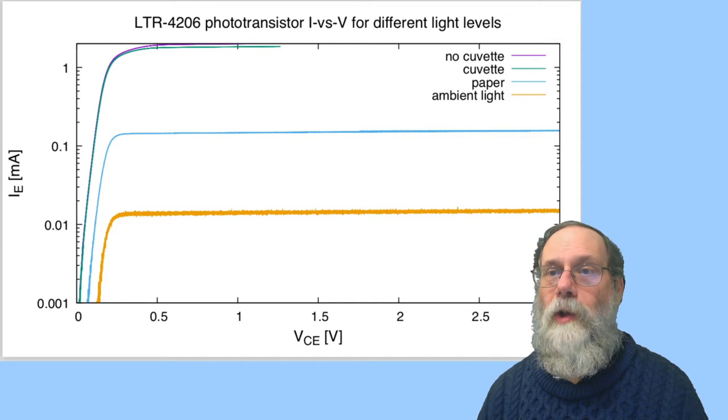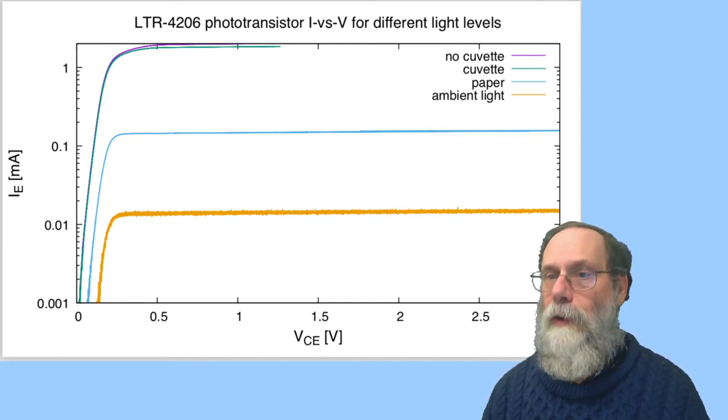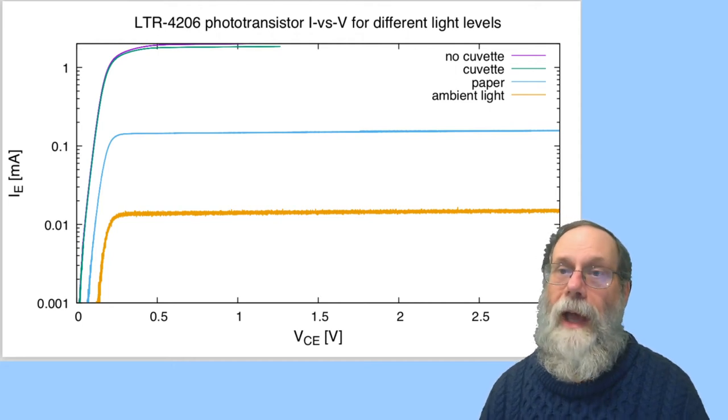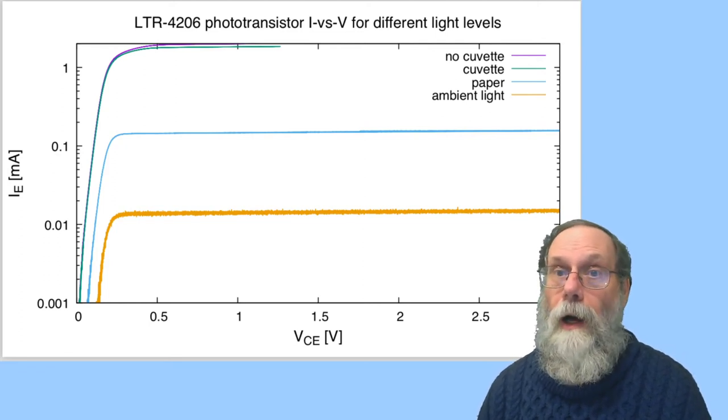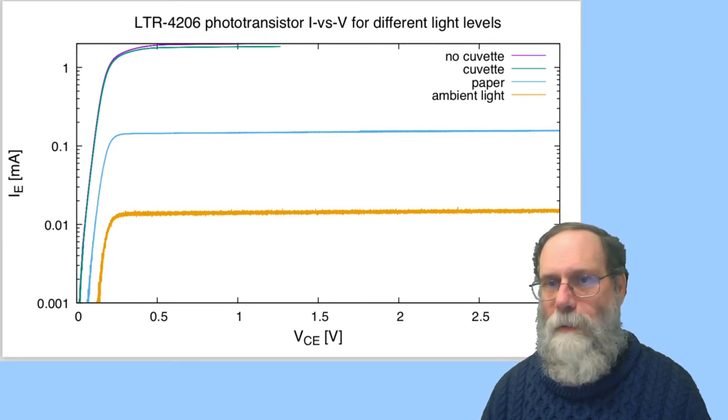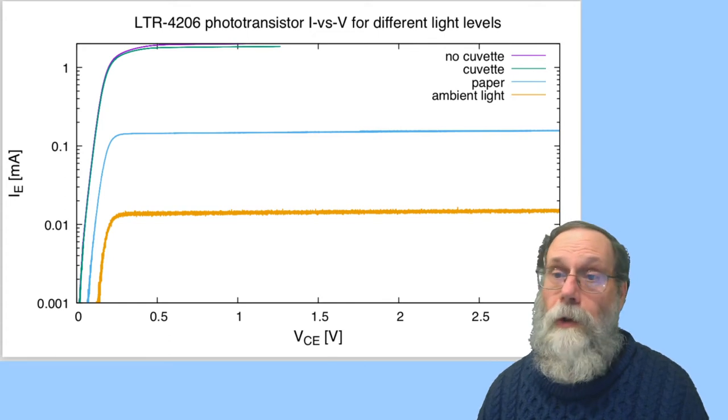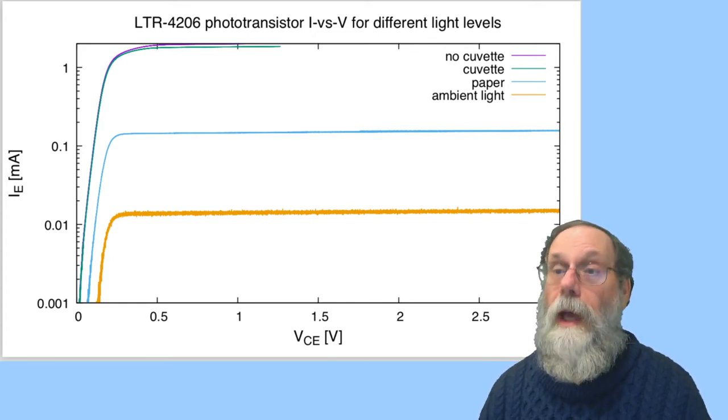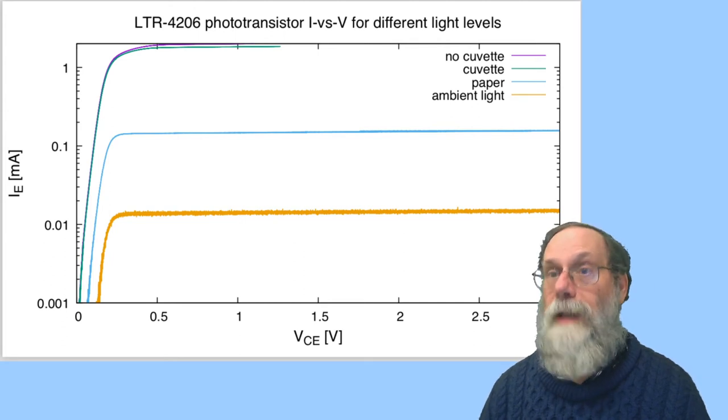So here's some measurements I made using cuvettes like that in a little setup where I was trying to keep any light out other than I had an LED and I had a phototransistor and I had space between them where I could stick a cuvette. The curves I have here show how much current I got as a function of the collector emitter voltage at different light levels. So with no cuvette in place, so I had basically nothing to absorb light other than some air, I got a fairly large current. If I stuck the cuvette in, the cuvette was quite transparent at the wavelength of light I was using and so it didn't absorb much. It was an empty cuvette.